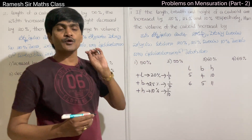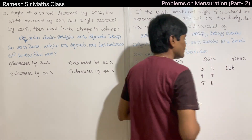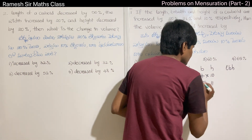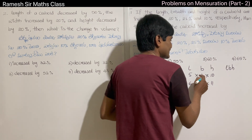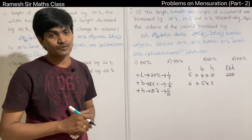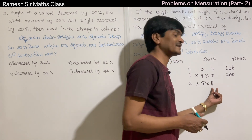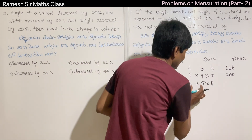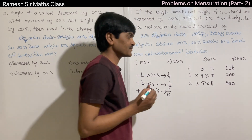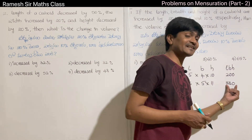The volume formula for the cuboid is L×B×H — three measurements multiplied together. The actual volume is 5×4×10 = 200 units. With increased measurements, the new volume is 6×5×11 = 330 units.